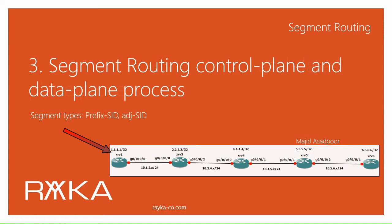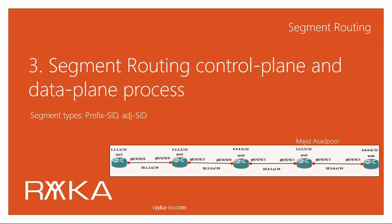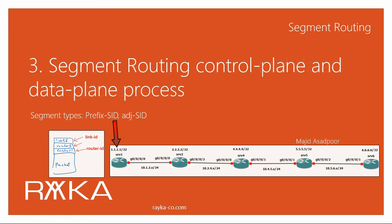That means when a packet arrives at the edge of the network, we can determine the path of the traffic based on our policy and the quality of service requirement of the traffic, and then add that path to the packet itself. By edge of the network, I mean access switches in the LAN and data center network which receive traffic from a server or host, and PE routers in the service provider network which receive customer traffic.